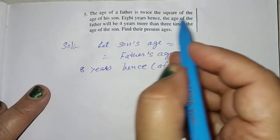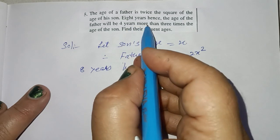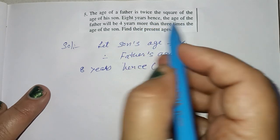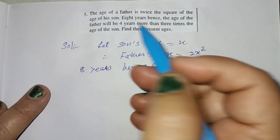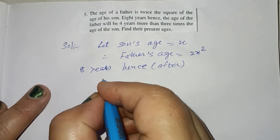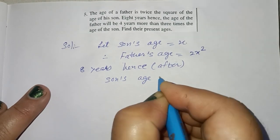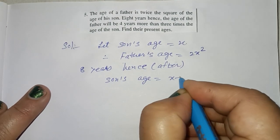The age of the father will be 4 years more than 3 times the age of the son. Now, 8 years after, son's age is equal to x plus 8.